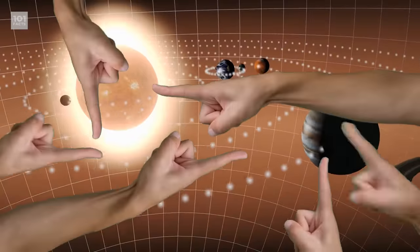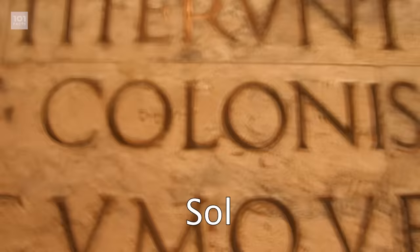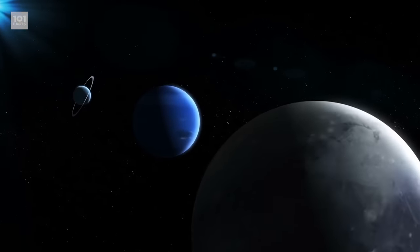Why is the solar system called the solar system? Well, the word solar comes from the Latin word sol, which means sun, and so everything related to the sun is called solar. The sun is at the center, so it's only right that we name it after that.